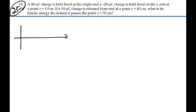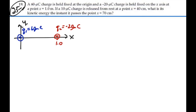Let's construct what's going on here. We're really going to need the x-axis. We have a positive charge at the origin — call it q1 of 60 micro coulombs — then a negative charge at x equal to 1, q2 of negative 20 micro coulombs. Then we have a third charge, q3 of 10 micro coulombs, located at x equal to 0.4, traveling to x equal to 0.7.